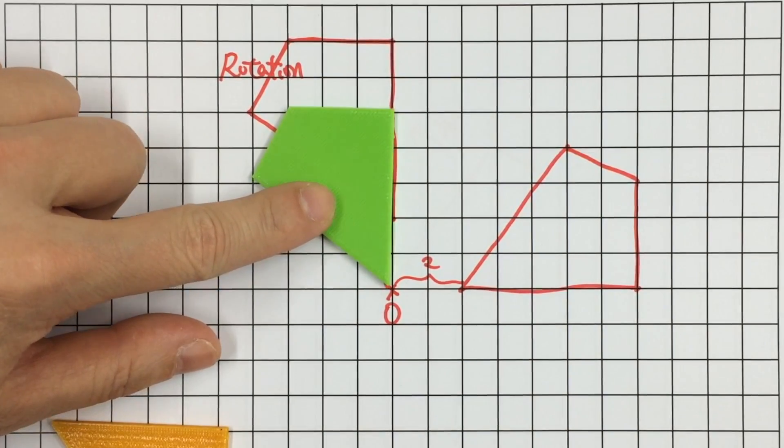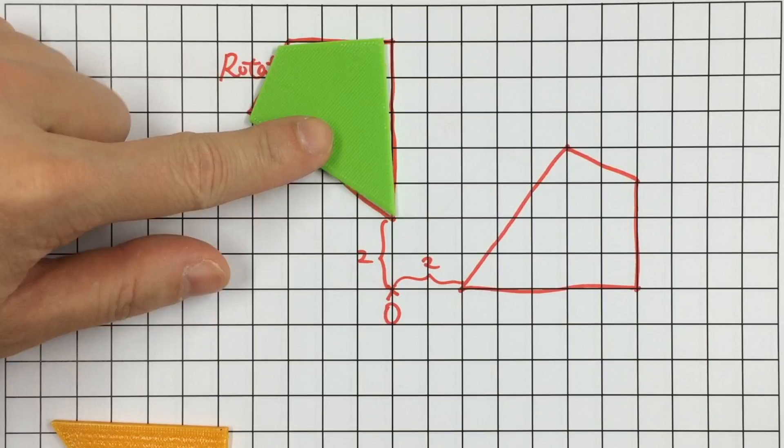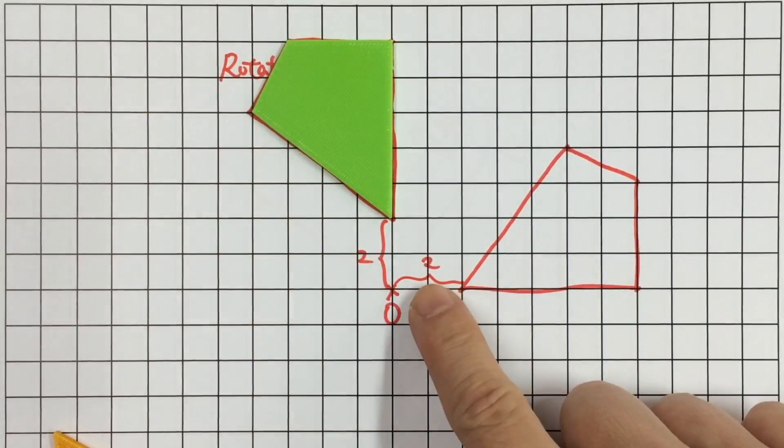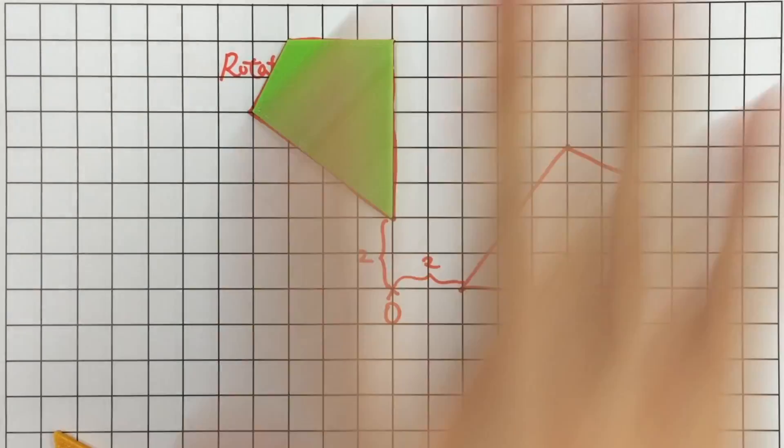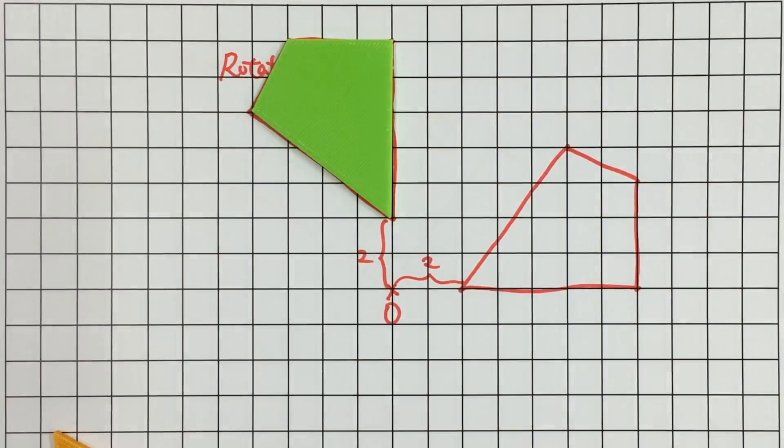Last step, we move the object away from the center O by the same distance in the first step. That is two units away. Therefore, this is the final image position.